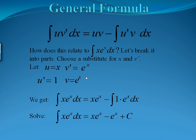How do we pick the u and the v'? In general, you want to pick your u as something that will become simpler when you take the derivative. Here, our choices are x and eˣ. Since eˣ doesn't change when we take the derivative, it doesn't become simpler. So here, we're going to let our u be x, which means our v' is eˣ.